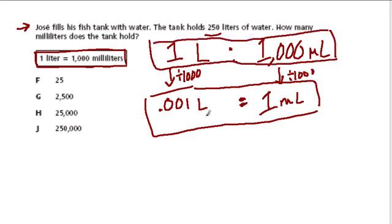For every 1 liter, we have 1,000 milliliters. So, if we have 250 liters, a new ratio, how many milliliters is that?